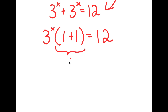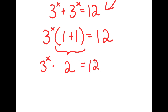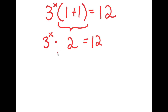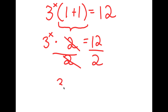And 1 plus 1, that's equal to 2. So I get 3 to the power of x times 2 is equal to 12. Now, from here, I'm going to divide both sides by 2. So when these two cancel out, I get 3 to the power of x is equal to 6.